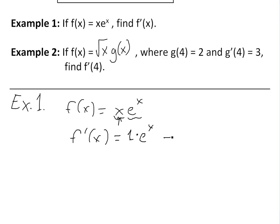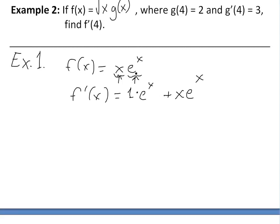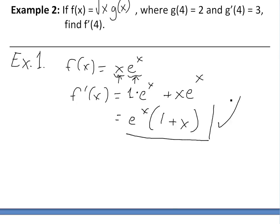And then we put x here, times the derivative of e to the x, which is just e to the x. The derivative of e to the x is e to the x — you'll see more on this in the video link below on exponential functions and their derivatives. So this is our answer, and we can simplify it by factoring out e to the x, giving us e to the x times one plus x. That's our derivative.